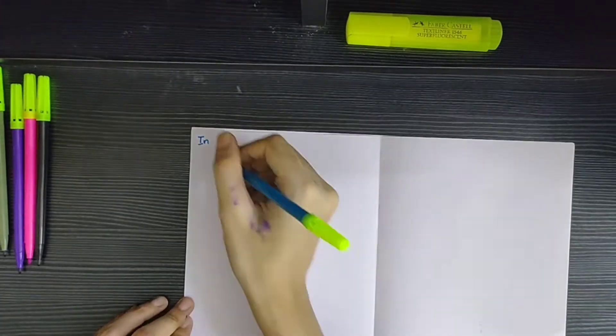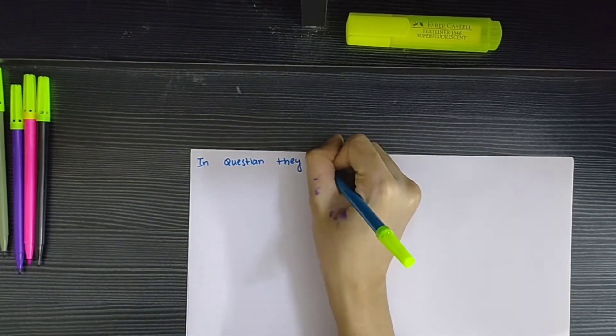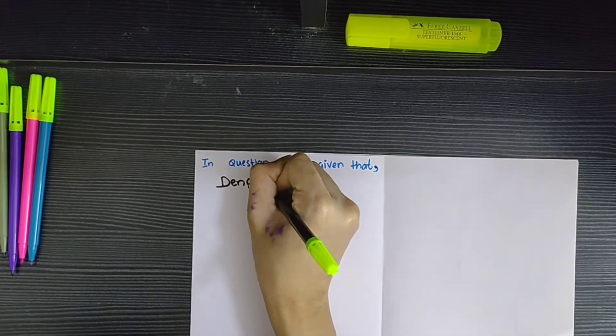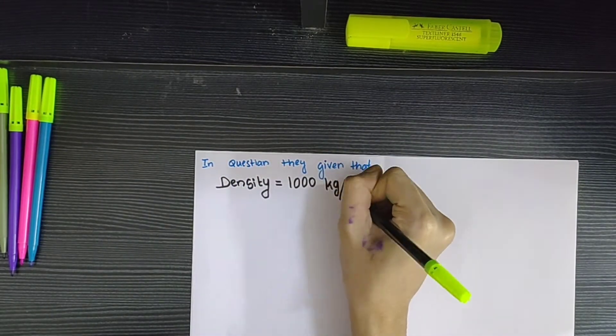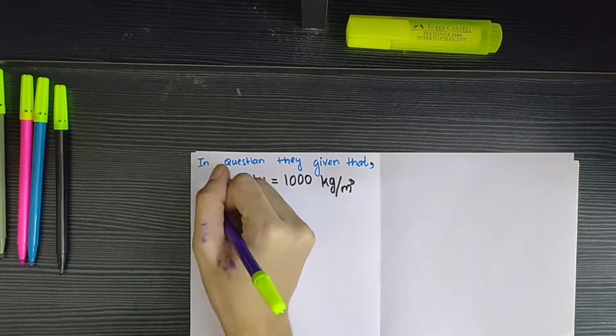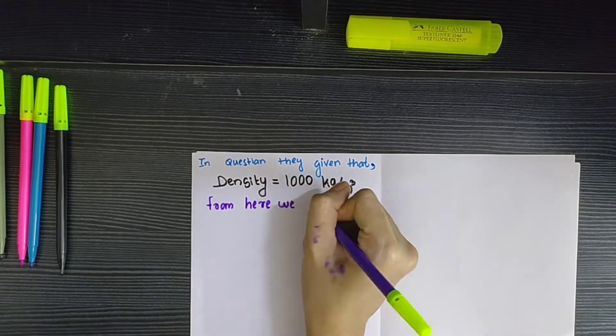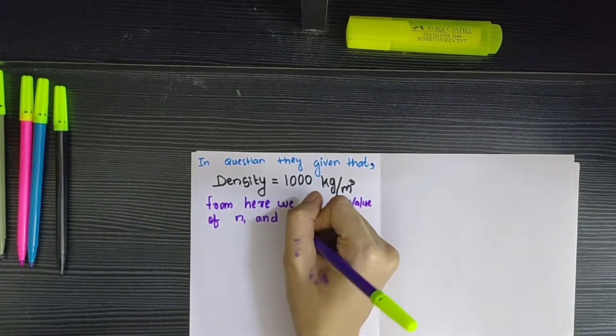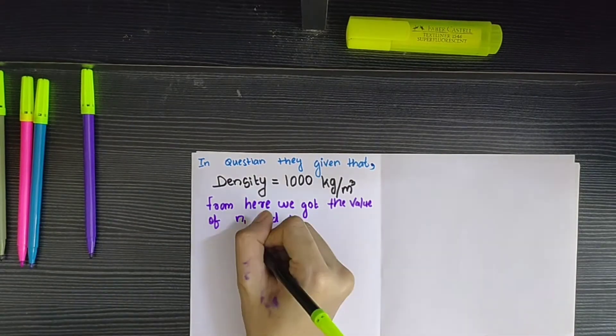In the question they given that the value of density is equal to 1000 kg/m³. From here we got the value of n1 and u1. n1 is the numerical part in unit system 1 and u1 is the unit system 1.